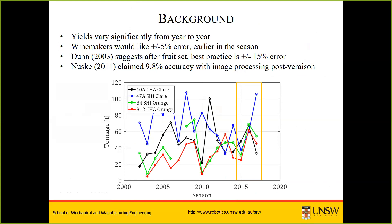To lay the context for why this project came about, a GAPS analysis by Wine Australia some years ago found that the accuracy of yield estimation varied significantly. As most of you will be well aware, yields vary dramatically from year to year. Over the last 15 or so years for the four study blocks, there is great variation from year to year, depending on site and variety.